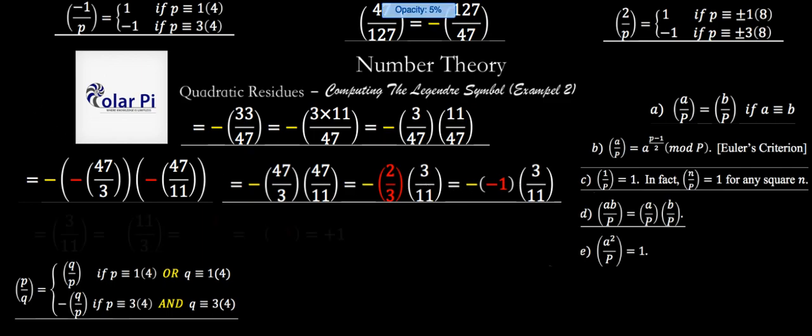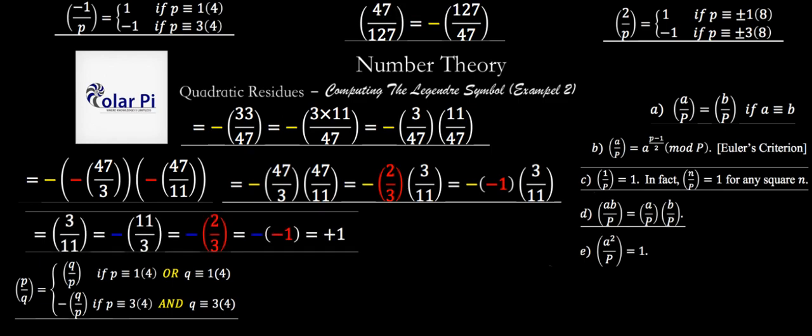So what we have now is just simply 3 over 11. Now, both 3 and 11 are congruent to 3 mod 4, as we've already said. And therefore, we can flip 3 over 11 and write 11 over 3 as long as we negate it. And we do that. And then reduce 11 mod 3. So 11 is going to turn into 2 mod 3. So we've got this, and then we've got this blue negative from flipping 3 over 11 into 11 over 3.